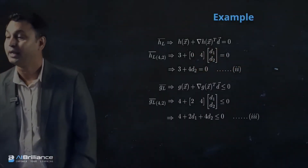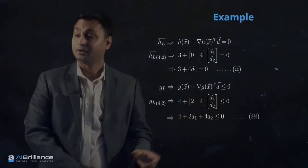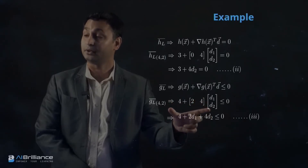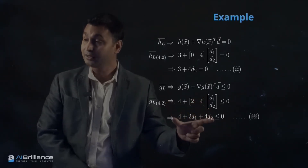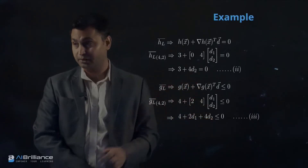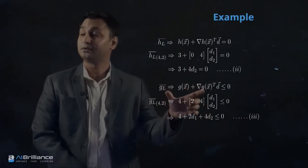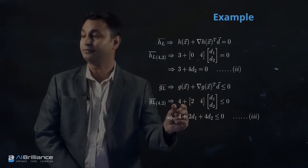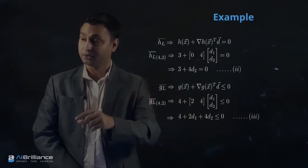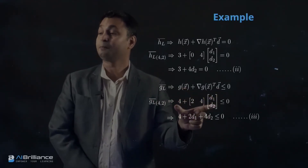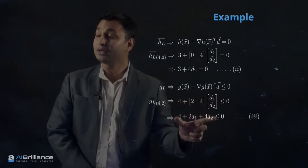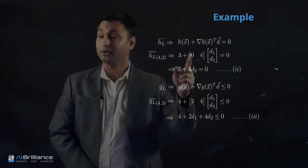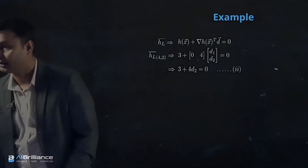Similarly, we form the local approximation of the inequality constraint as a linear approximation, even though in the original space it is nonlinear. Using the linearization equation with the previously derived terms, we convert and create a local inequality constraint that is linear in nature.